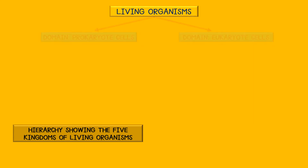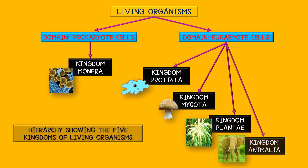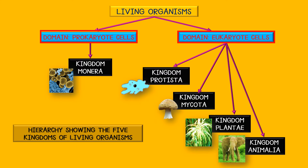You will remember from the video about biodiversity that there are five kingdoms of living organisms that you will learn about in grade 7. Living organisms are divided into two domains: domain prokaryote and domain eukaryote. Only kingdom Monera belongs to domain prokaryote. Domain eukaryote is divided into kingdom Protista, kingdom Mycota, kingdom Plantae, and kingdom Animalia. You will understand more about these kingdoms later in the term.